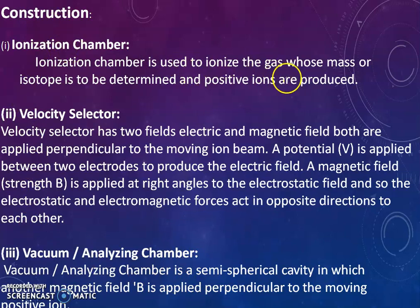Now how ionization chamber works. It is used to ionize the gas whose mass or isotope is to be determined and positive ions are produced. The main function of ionization chamber is to produce a stream of positive ions. Then second important part is velocity selector.